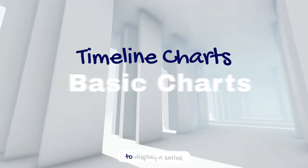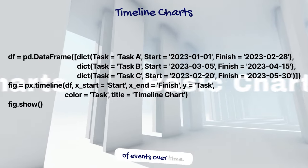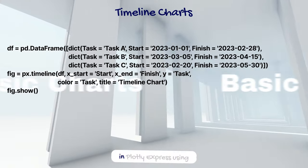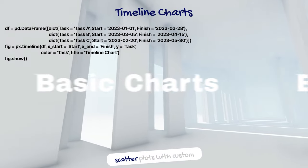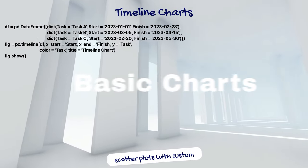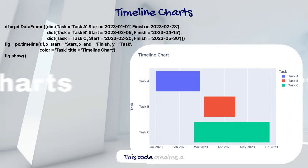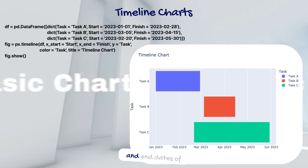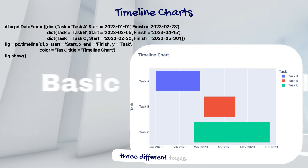Timeline charts are used to display a series of events over time. They can be created in Plotly Express using scatter plots with custom date formatting. This code creates a timeline showing the start and end dates of three different tasks.